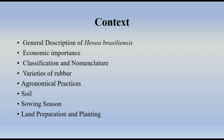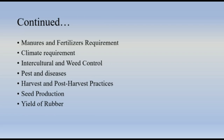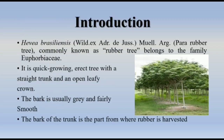The contents of my presentation are: general description, economic importance, classification and nomenclature, varieties of rubber, agronomic practices including soil, sowing season, land preparation and planting, manure and fertilizer requirement, climate requirement, intercultural and weed control, pests and diseases, harvest, post-harvest practices, seed production, and yield of rubber.